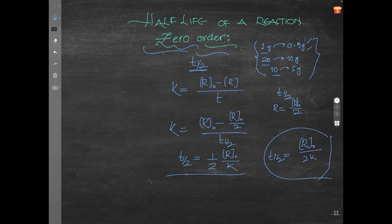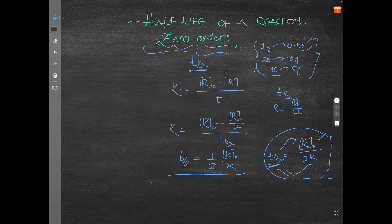From this formula it is clear that for a zero-order reaction, t-half is directly proportional to initial concentration and inversely proportional to the rate constant k. As a memory aid: if t-half is directly proportional to initial concentration, that is zero order; if t-half is not related to initial concentration, that is first order; if t-half is inversely proportional to initial concentration, that is second order. Remember this formula — it is mandatory.